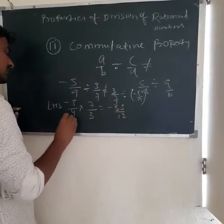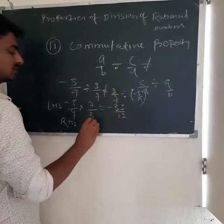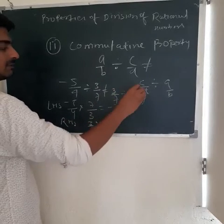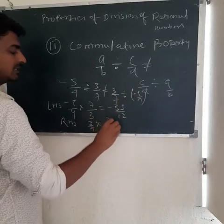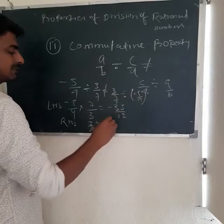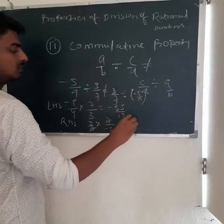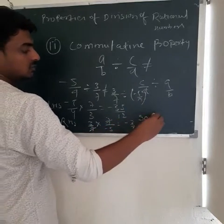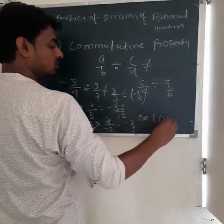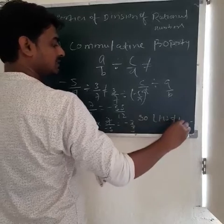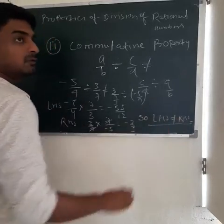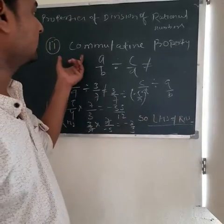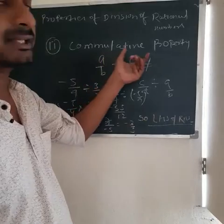Now the RHS side: 3 upon 7 multiplied by 7 upon minus 5 — the 7s cancel — equals minus 3 upon 5. So here, LHS is not equal to RHS. Therefore, in case of division, the commutative property does not follow.